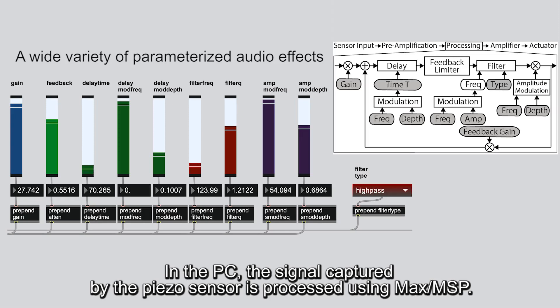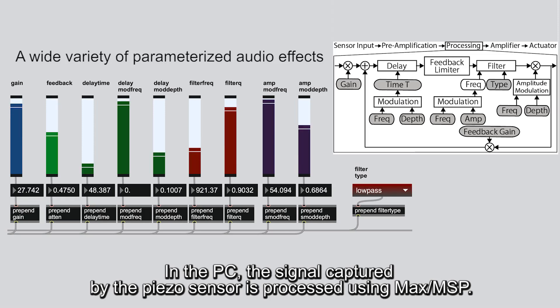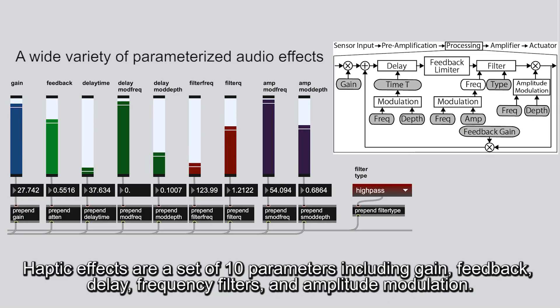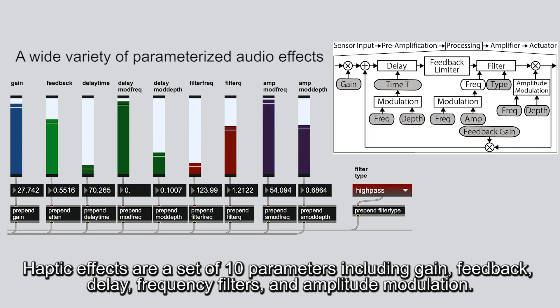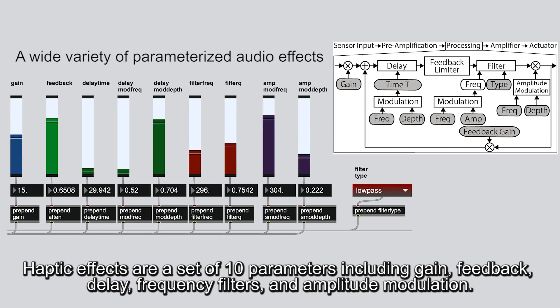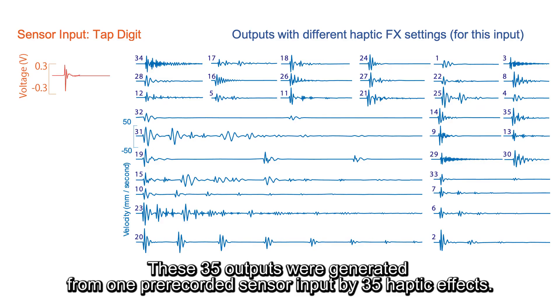In the PC, the signal captured by the PSO sensor is processed using MAX MSB. The haptic effects are a set of 10 parameters including gain, feedback, delay, frequency filters, and amplitude modulation.